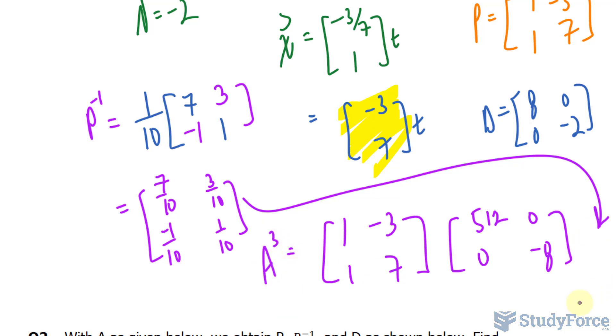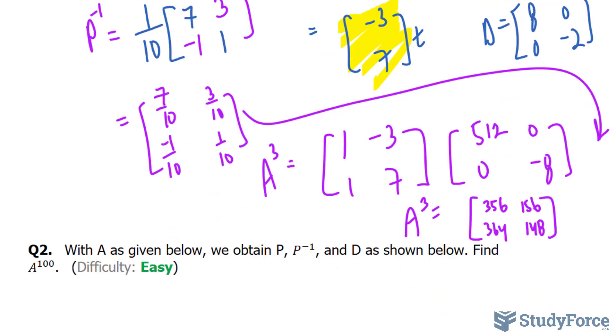Now, to save time, I'm not going to show you how to multiply 3 matrices. But if you do it correctly, your final matrix should look like this. That's the answer to question number 1.